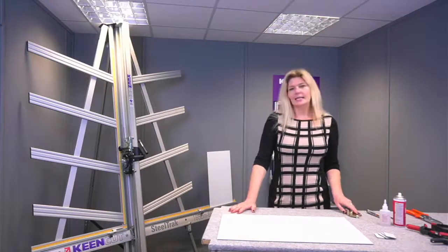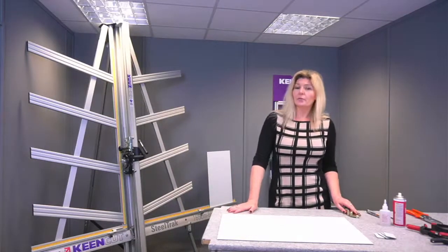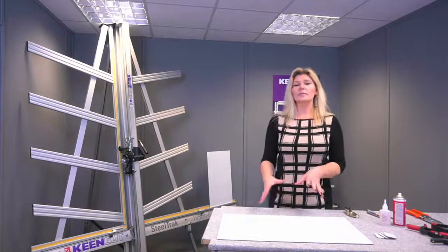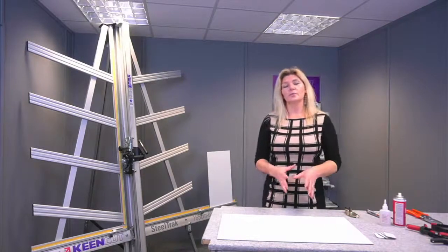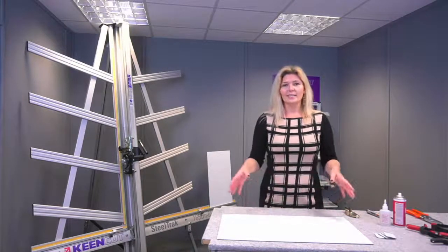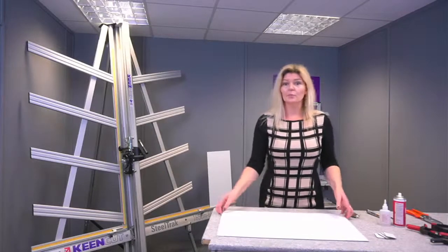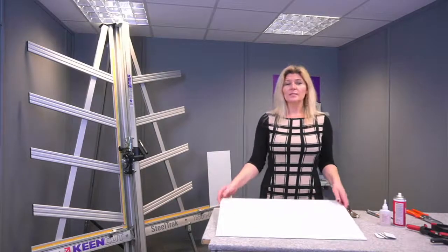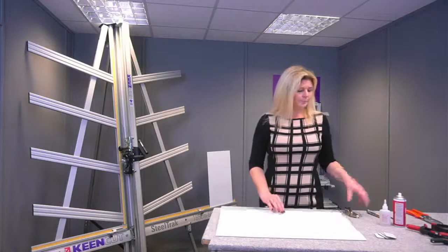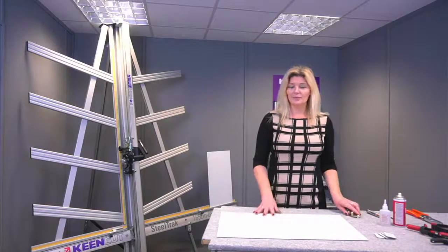I'm going to be using today a V-grooving tool number three and the number actually corresponds with the thickness of the board that I'm going to be V-grooving. So three mil board ACP board is the most common. So I'm going to be using a three mil board with a number three V-grooving tool.